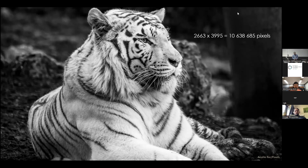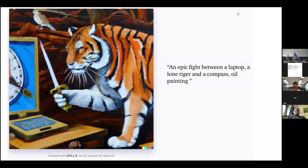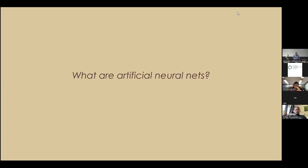So I think that this example might convince you that it might not be so trivial to program such a task on a computer. So here's another example. So this kind of blew a lot of us away in the last two months or so. This is from DALL-E 2, which is an AI system from OpenAI. So all I did is type in with a friend an epic fight between a laptop, a lone tiger, and a compass oil painting. And then so this is all the computer gets, all the system gets, and it produces the image on the left. So this is a totally remarkable generative model.